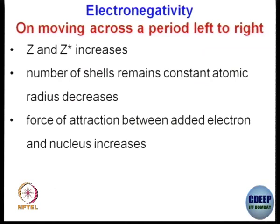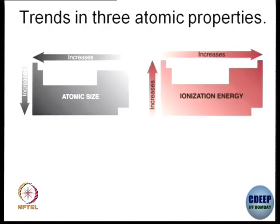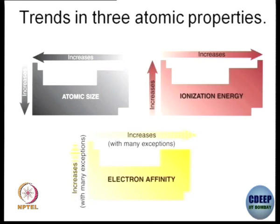On moving across the periodic table from left to right, Z and Z* both increase, the number of shells remains constant, atomic radius decreases, force of attraction between the added electron and nucleus increases, and therefore electronegativity increases along a period. In summary: atomic size decreases left to right and increases top to bottom; ionization energy increases left to right and decreases top to bottom; electron affinity increases left to right and decreases top to bottom.